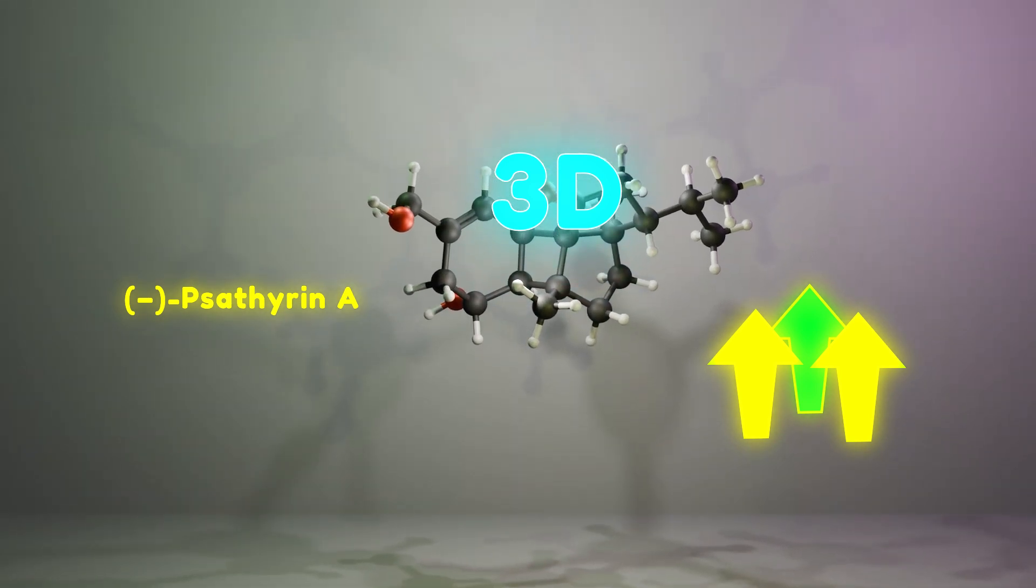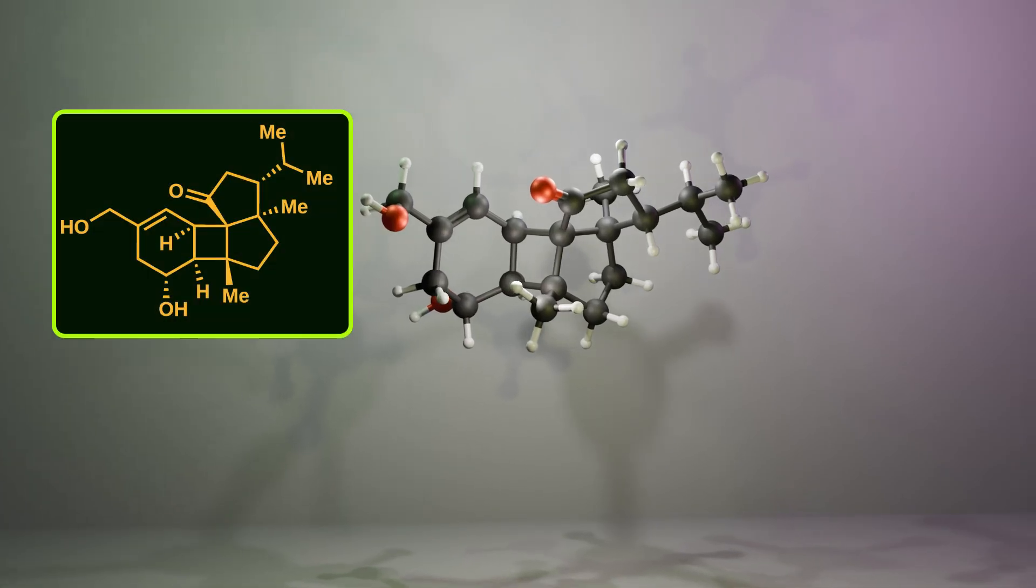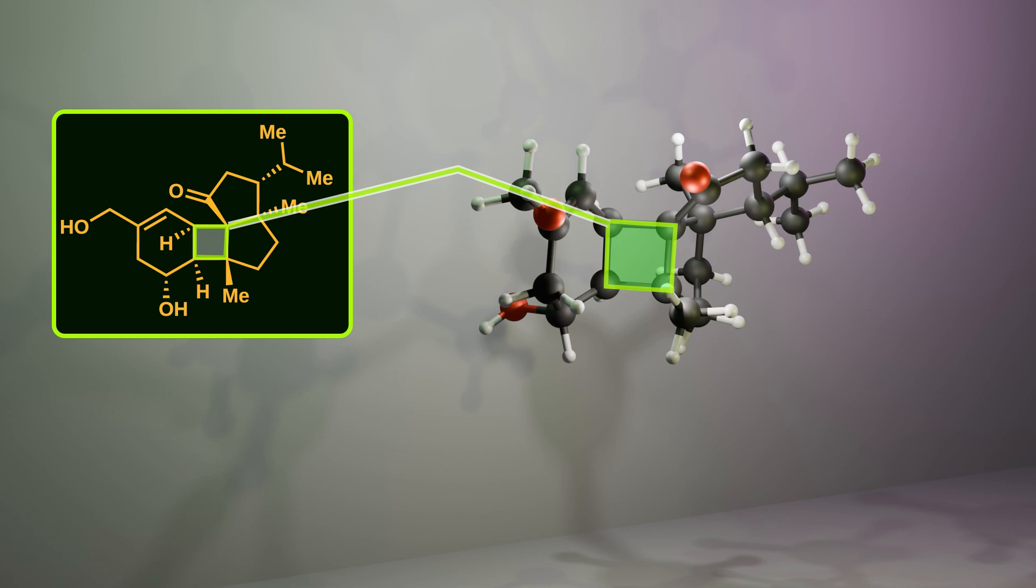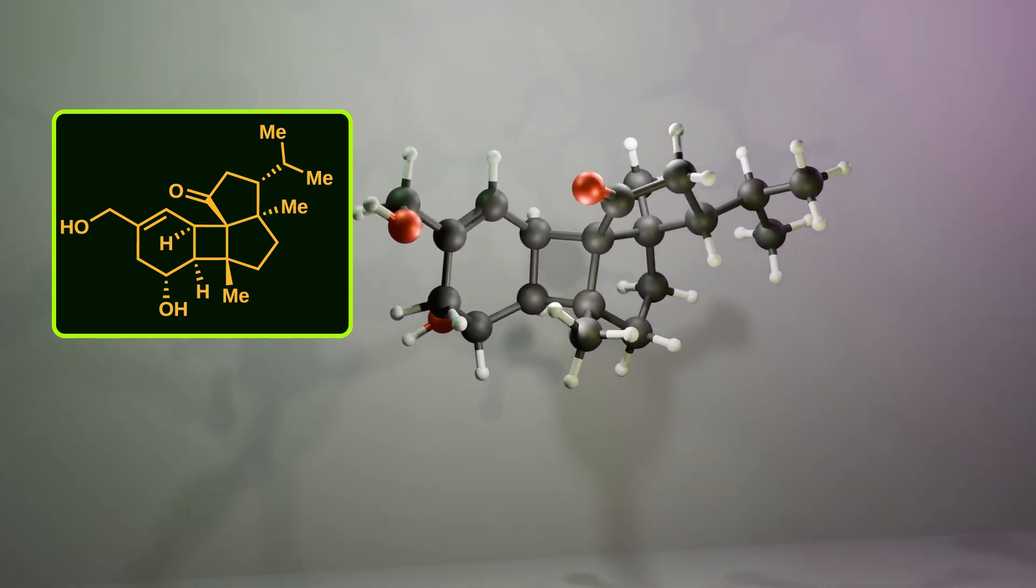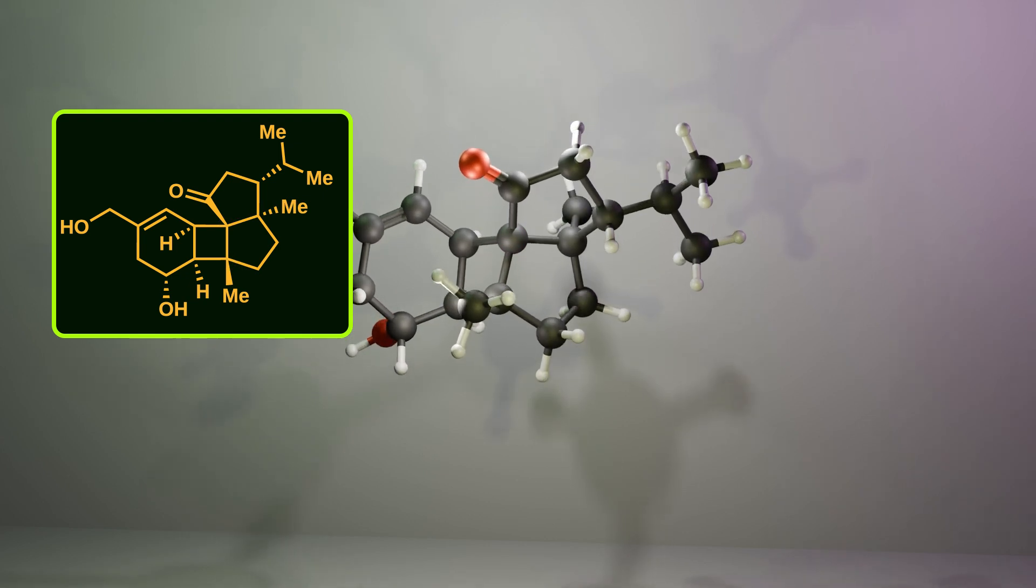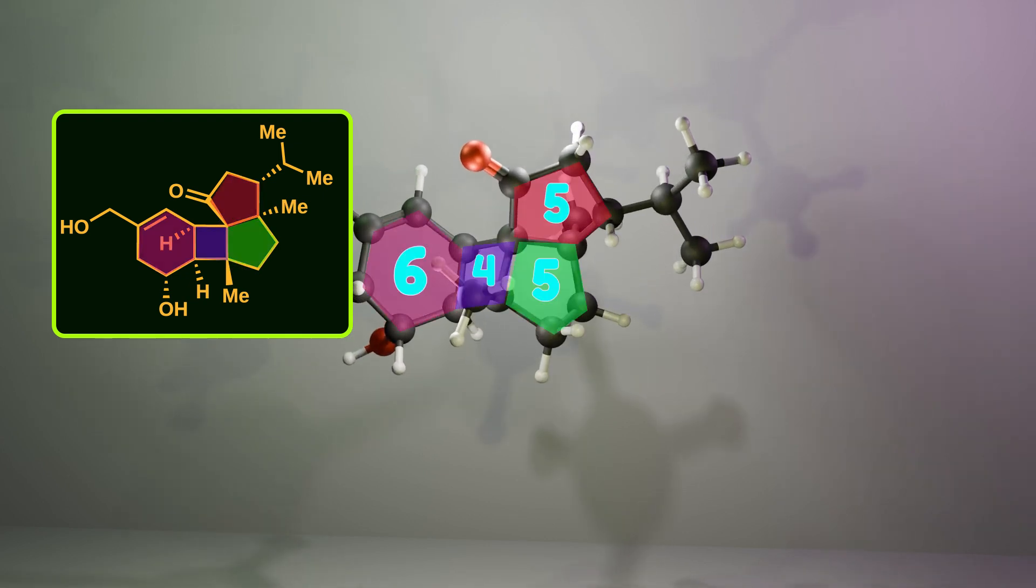So let's dive into it. Sufframine A belongs to the diterpene natural product family. The first thing that grabs your attention is the central cyclobutane ring. Interestingly, it contains two quaternary chiral centers. In addition, this molecule has a unique 6-4-5-5 tetracyclic carbon skeleton including seven contiguous stereogenic centers, three of which are quaternary.